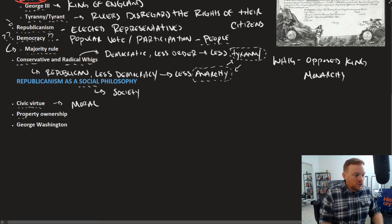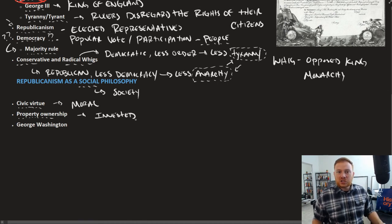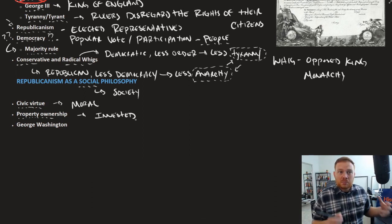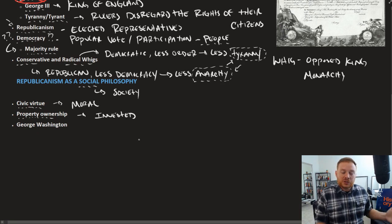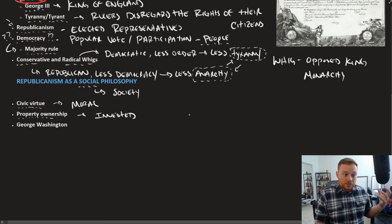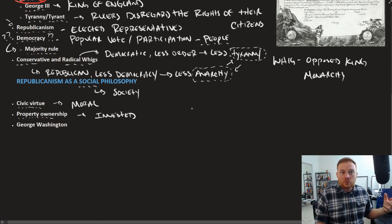The founders also believed that citizens need to be invested in the well-being of their nation — there needs to be something on the line for them to lose. For that reason, many believed that property ownership should be a qualification for voting. The idea is that property owners have something to lose and are therefore more invested in the country and willing to participate in it, in a way that a non-property owner might not.